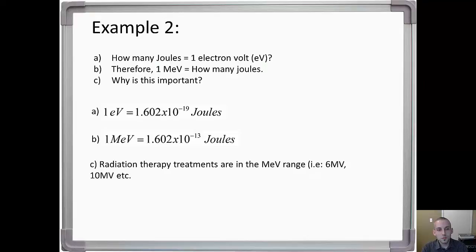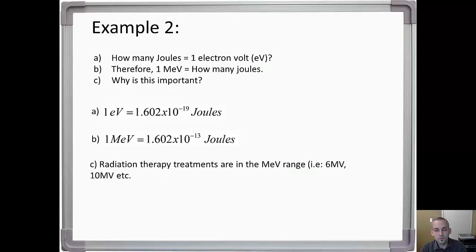A lot of the time when we're giving radiation therapy treatments, we're dealing with the MV range — like 6 MV or 10 MV. So working through problems, you're likely using big energies. For example, 6 MeV would be a typical electron energy used in a calculation. You're going to have to remember that 1 MeV equals 1.602 times 10 to the minus 13 joules — that should be off the top of your head.